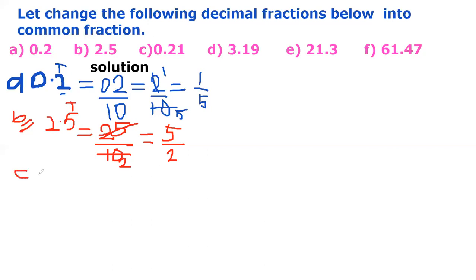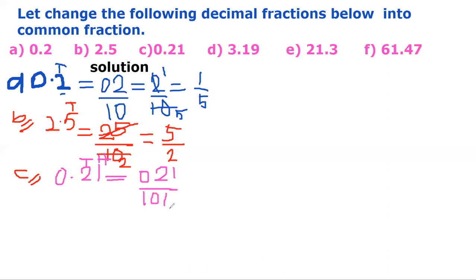Example C: 0.21. Indicate the position of the decimal numbers. Reading from the left: the first digit is tenths, the second is hundredths. Since the last digit is placed under the hundredths, the entire number is divided by 100. So 0.21 equals 21 over 100.